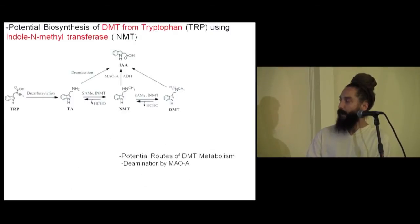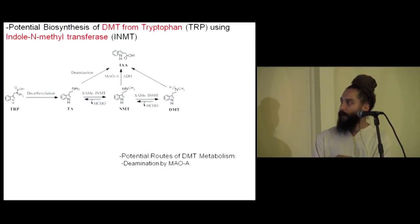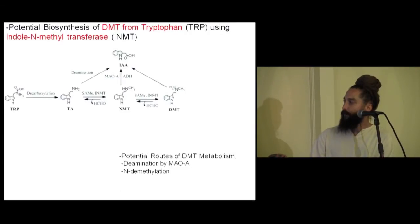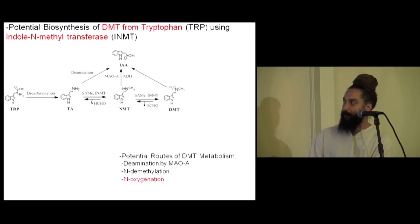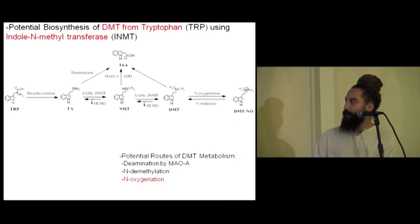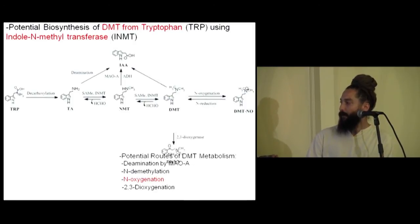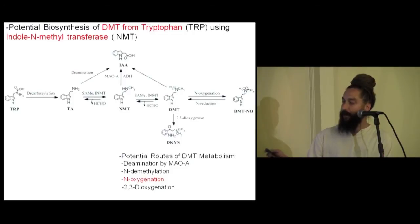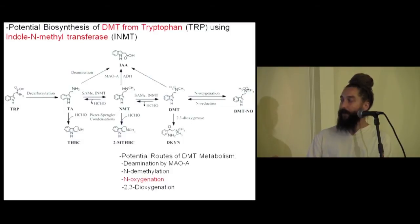Just a review of the metabolism again: DMT can be deaminated by MAO to give you indoleacetic acid — but we can't say it's just coming from DMT because it could come from other sources. It can be N-demethylated back to NMT, or N-oxygenated into DMT N-oxide. We thought it might turn into dimethylkynuramine — we couldn't find any, so that doesn't seem to be a route. And it can also be converted into beta-carbolines.